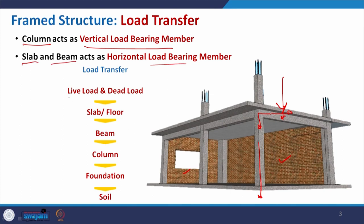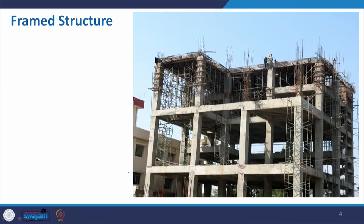The live load and dead load transfer to the slab — or sometimes we refer to this as floor — to the beam, beam to the column, and then foundation. In this case the frame structure shows there is no wall being constructed as of now. This is some under-construction building — it is just a frame, or sometimes we also call it the skeleton structure. In this skeletal structure you can find the arrangement of your beam and column.